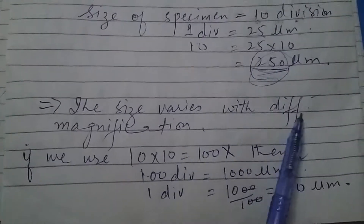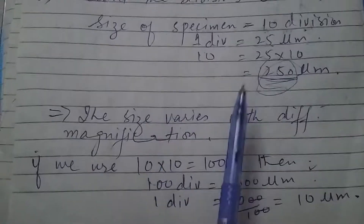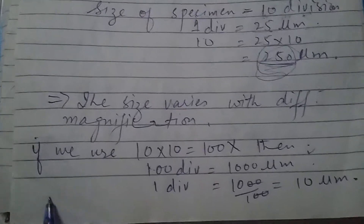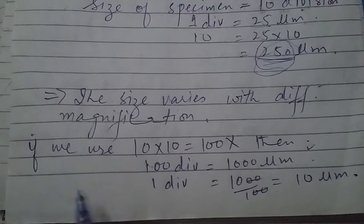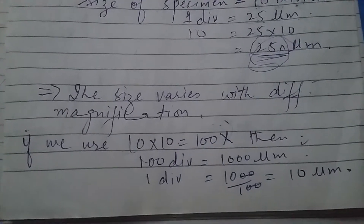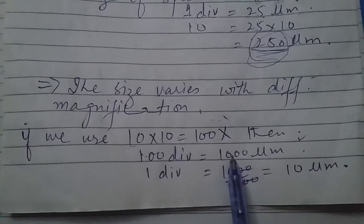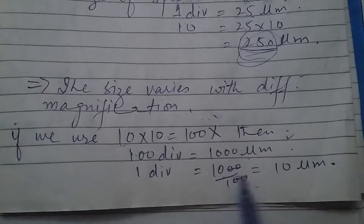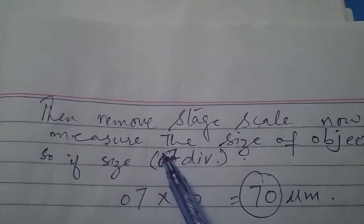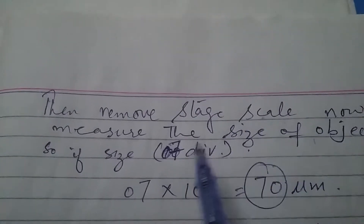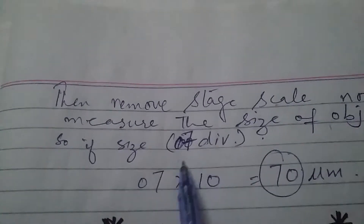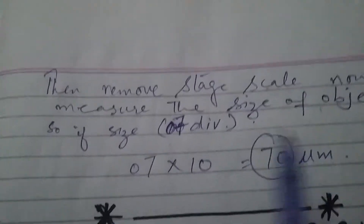This size will vary with different magnification. For example, at a different magnification where 10 mm stage scale gives 100 divisions equal to 1000 micrometers, 1 division equals 10 micrometers. If a specimen then spans 7 divisions, its size is 7 × 10 = 70 micrometers. So the calibration value changes depending on which magnification you use.